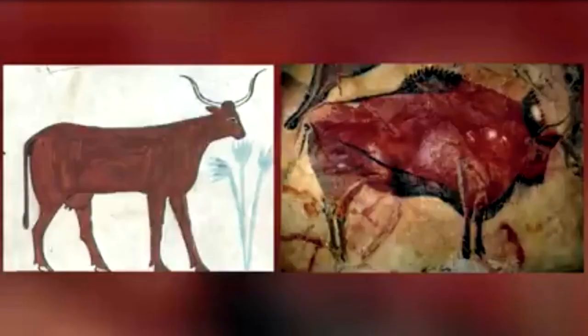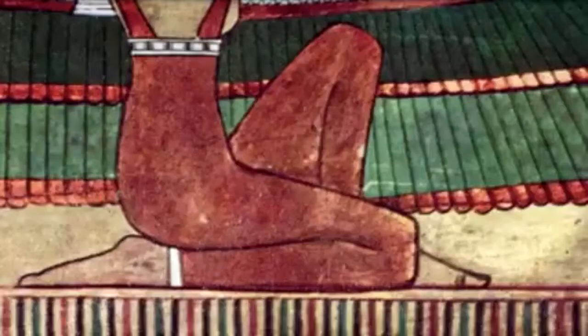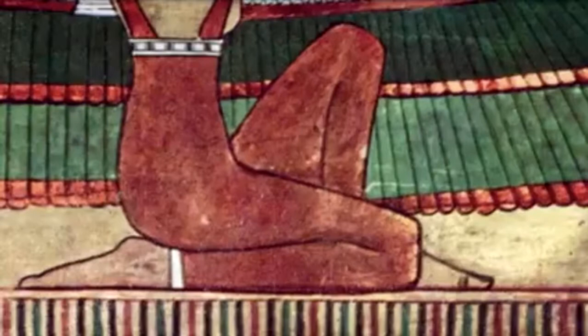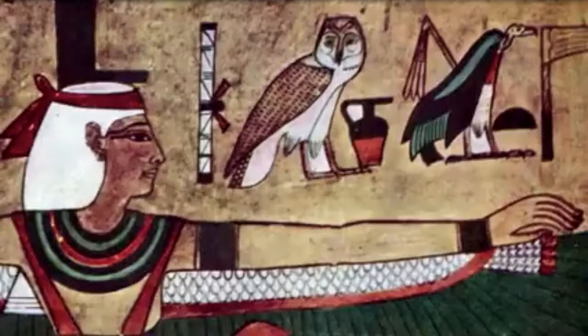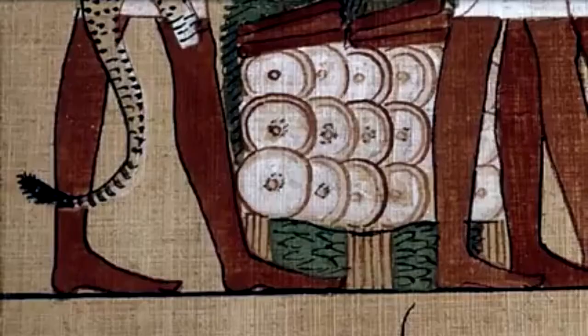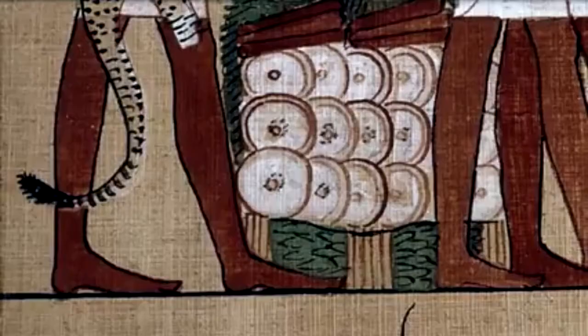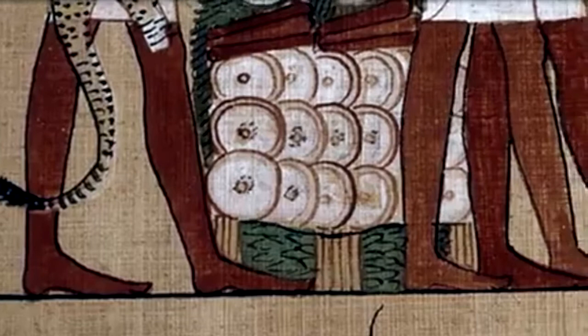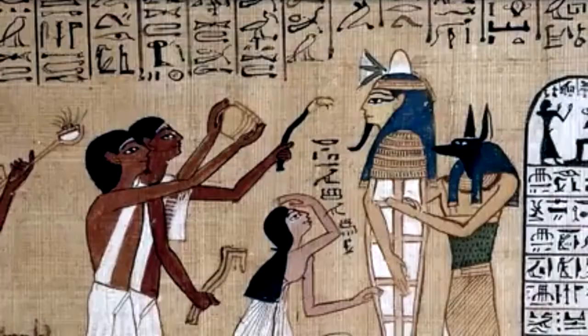Egyptians' use of color was also highly suggestive. Men who worked outside were often painted red, whereas women and indoor workers were painted yellow. Egyptian painting made use of the same mixed perspective found in Stone Age art, meaning different body parts and objects in the same scene were viewed from different angles to make each feature distinctly recognizable.